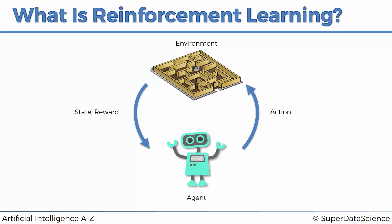Sometimes it might happen that an action won't change the state, or there won't be a reward for taking that action in that state. Nevertheless, the agent is going to keep taking actions, changing the state, and getting rewards. By doing that process, it's going to be learning about the environment — exploring it, understanding what actions lead to good rewards and favorable states, and what actions lead to bad rewards and unfavorable states.